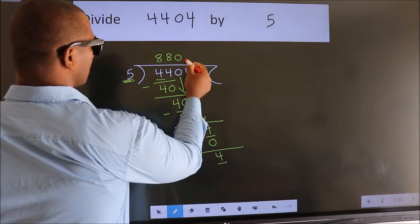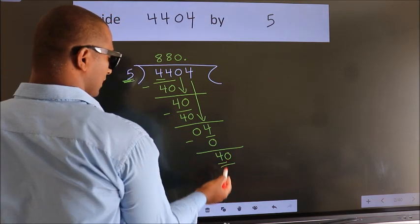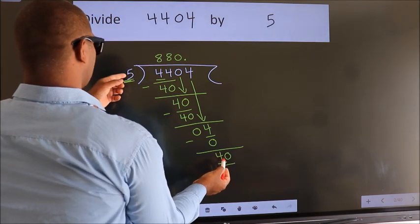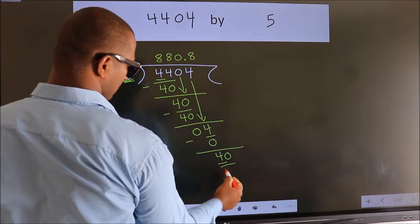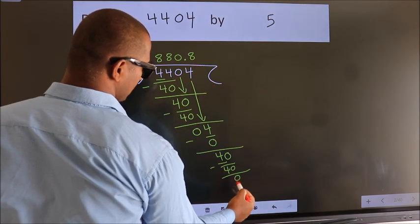So now we can put dot and take 0. So 40. When do we get 40? In 5 table. 5×8=40. Now we subtract. We get 0.